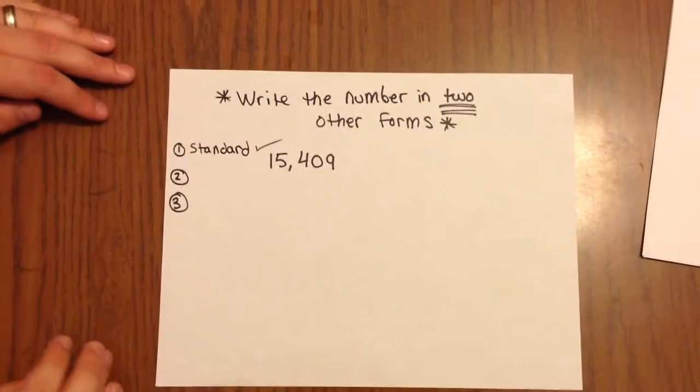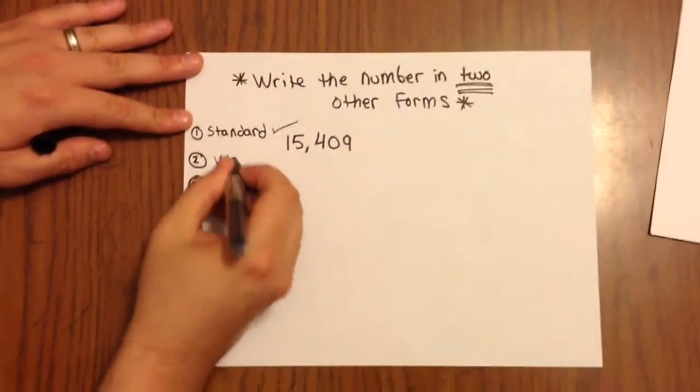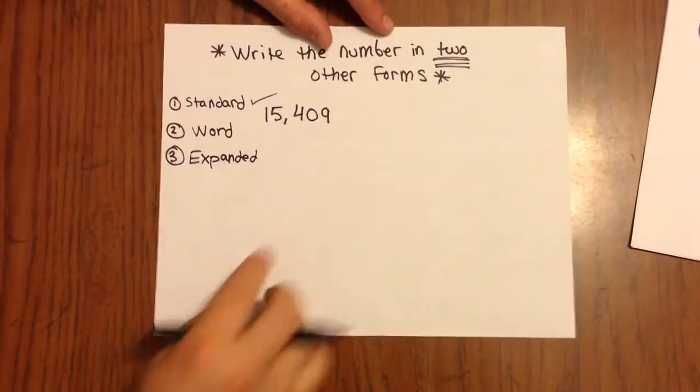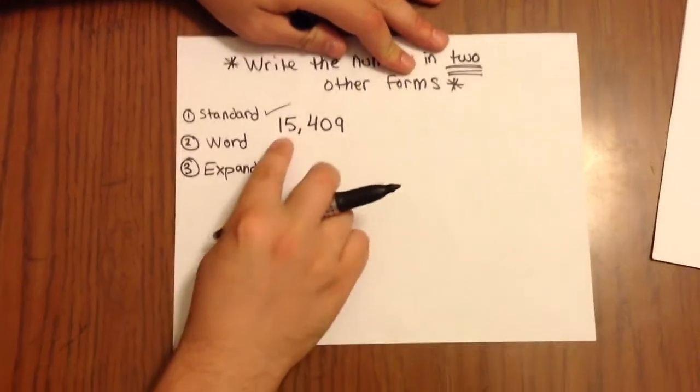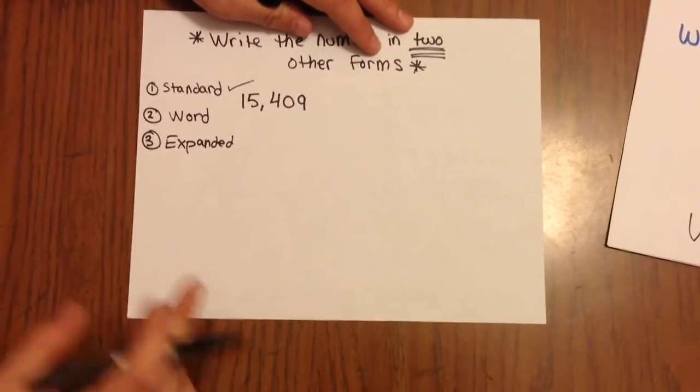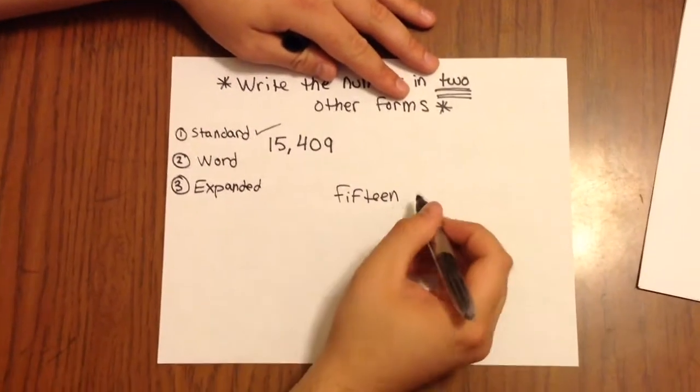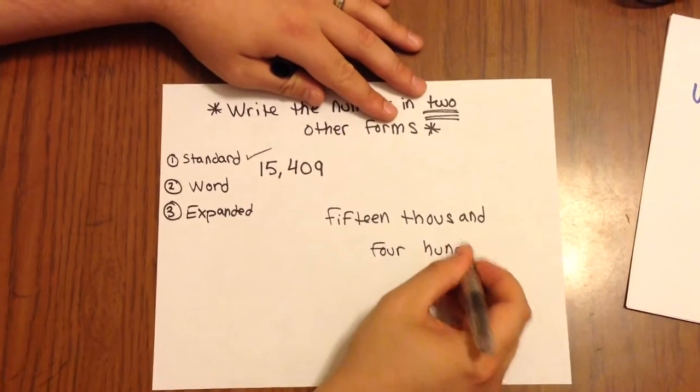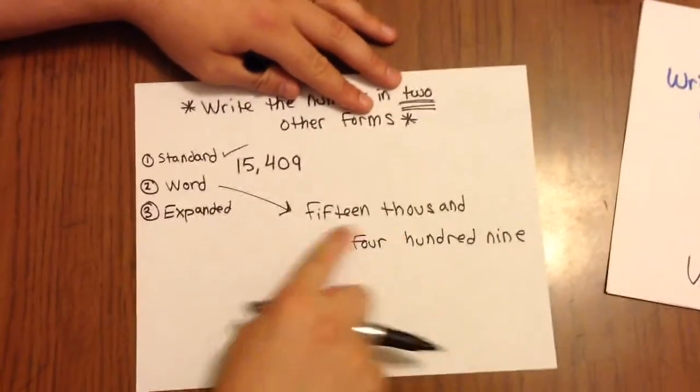But they want us to write this number in two other forms. So if we remember from class today, and we know that one of the forms is standard, we remember that the two other forms are word form and expanded form. So let's see if we can write this number here in word form. All right, so we have 15,409. So really what I want to do is I want to take the words that I just spoke, the way I normally pronounce that number, and just translate that into words. So okay, so here's the word form, 15,409.